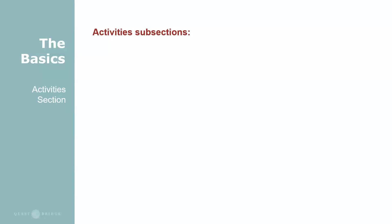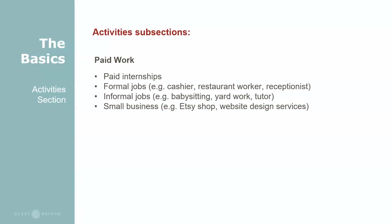The first subsection of the activity section is paid work. This includes anything that you do that you are paid for, whether it is a formal job such as a cashier or receptionist, or something informal like babysitting or tutoring. If you have your own small business like an Etsy shop where you create and sell items, or if you help companies with website design or social media and receive compensation, you can include it here. In one or two words: if you get paid for it, you should include it.